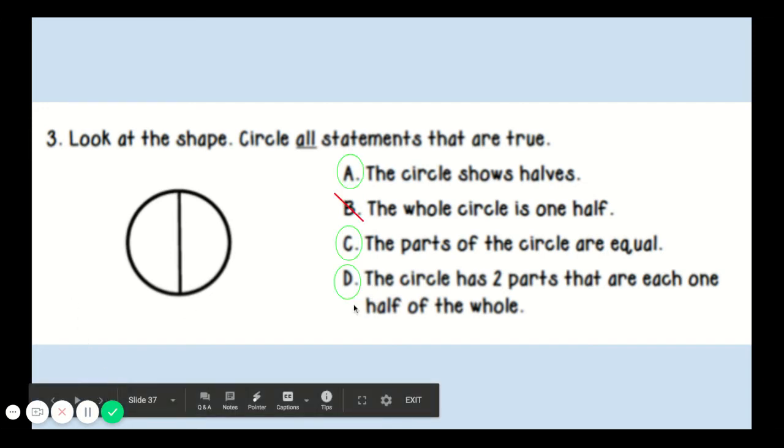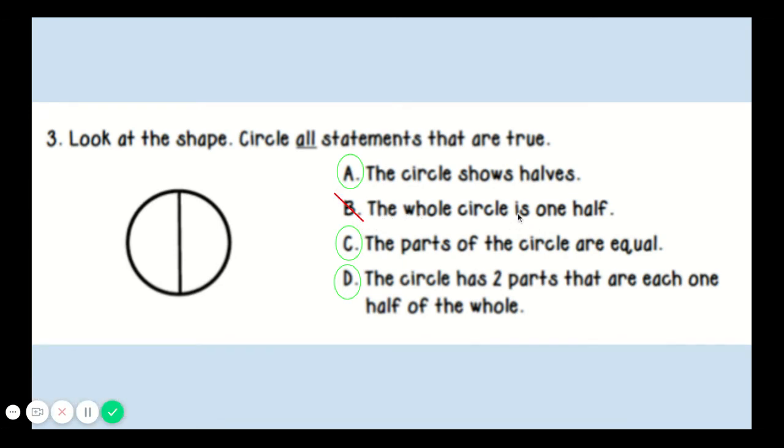Now, all of these are correct except B. The whole circle is not one half. The whole circle is two halves. One half, two halves.